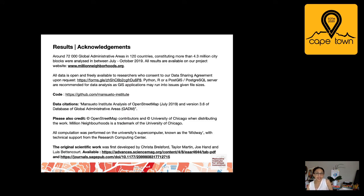All results of our project are available on our Million Neighbourhoods website and we invite you to visit us. We invite you also to contact us, as our data is freely available to researchers and our code is available on GitHub. The original scientific work first developed by Browsford et al. is available at the links provided, and we look forward to engaging with you on our data and building this map further. All computation was performed on the university's supercomputer known as the Midway, with technical support from the Research Computing Center. We have a suggested data citation and ask that you please credit the OpenStreetMap contributors and the University of Chicago when using and distributing our work.